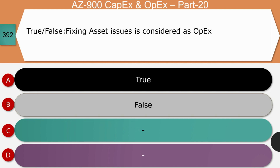True or false: Fixing asset issues is considered as CapEx. The right answer is false. Fixing asset issues means either maintaining an asset, altering it to work efficiently, or replacing spare parts. Expenditure under any of these categories is considered CapEx only if the asset is altered, improved, or replaced — then it is considered capital expenditure.